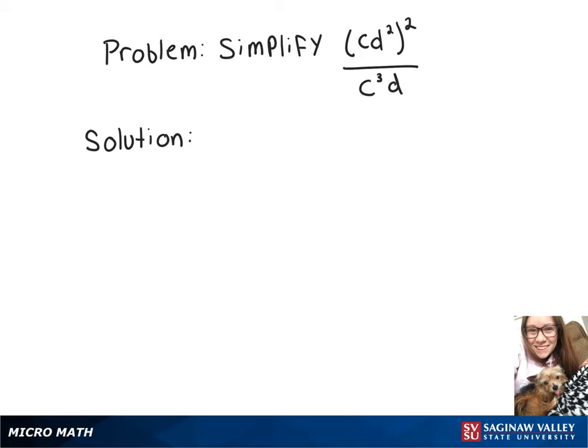We're going to simplify this expression. On top we have c times d squared quantity squared. So we're going to multiply each variable's exponent by 2, giving us c squared times d to the 4th over c to the 3rd times d.